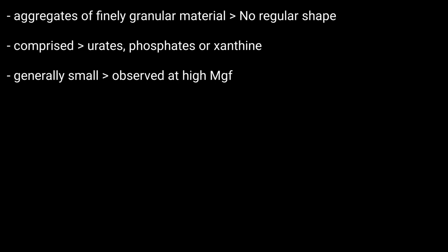Unless there are large amounts of them, they're only visible at high magnification. Amorphous urates, comprised of the mentioned constituents, tend to form in acidic urine.